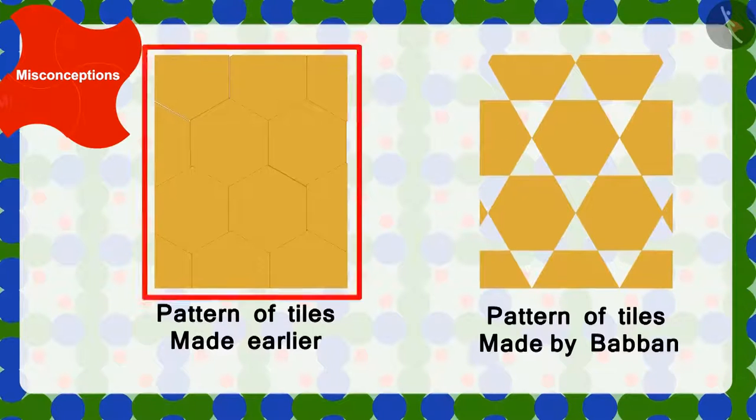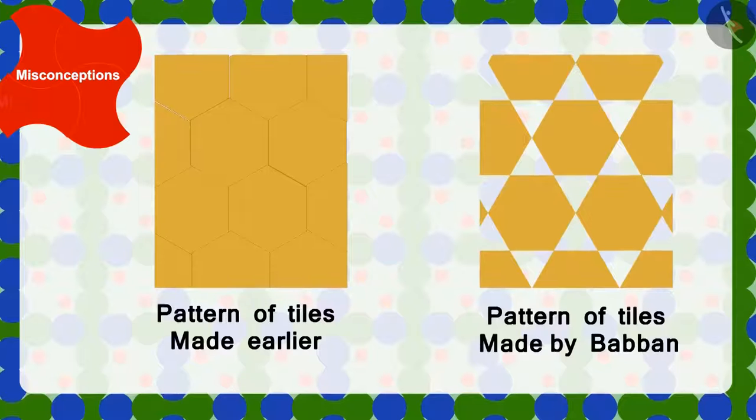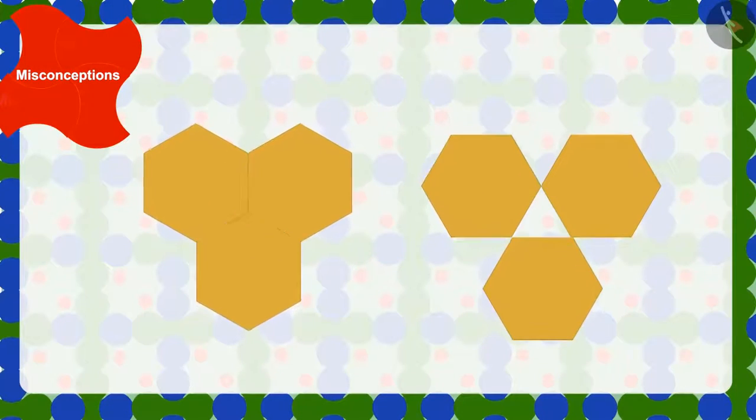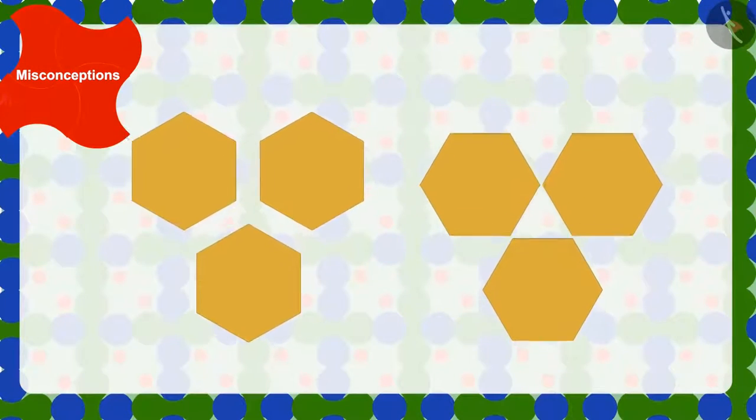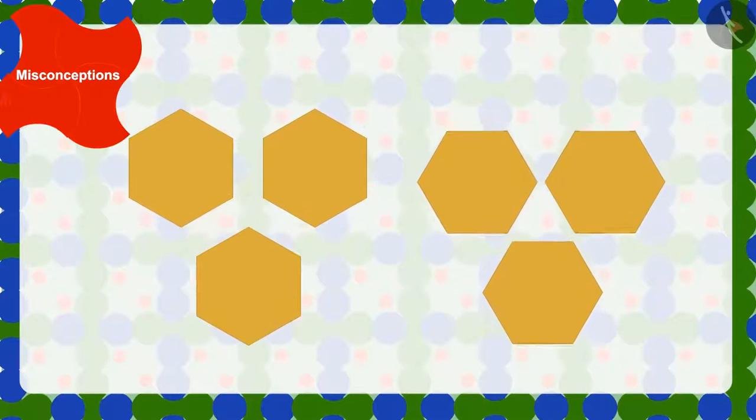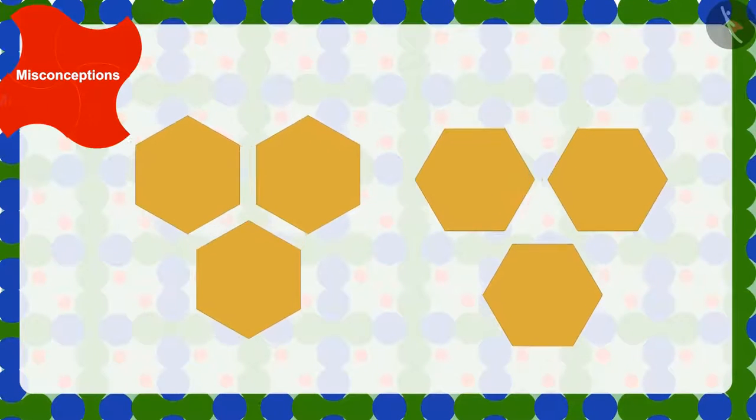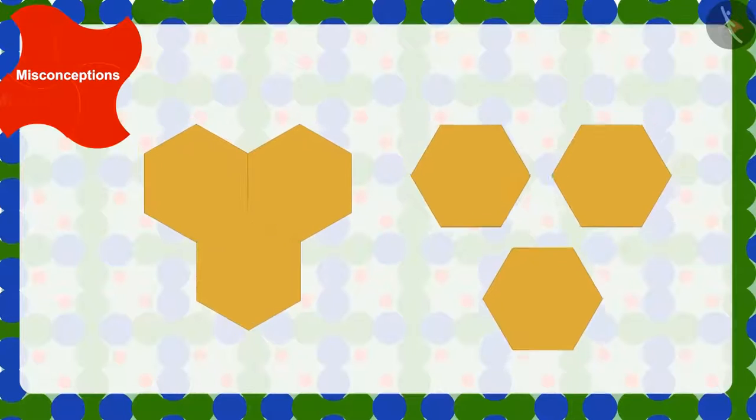Whereas there was no space in the previous pattern of the floor. Babban had used the same tiles that were already fixed on the floor. Then why did this happen?